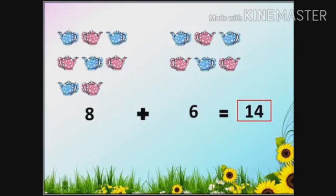Here there are eight teapots, and on the other hand there are six teapots. Let us count all together: one, two, three, four, five, six, seven, eight, nine, ten, eleven, twelve, thirteen, fourteen. There are fourteen teapots. That means eight plus six is equal to fourteen.